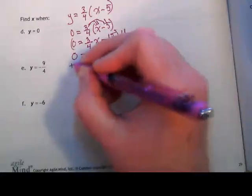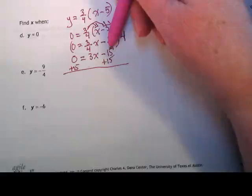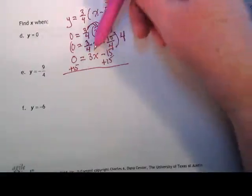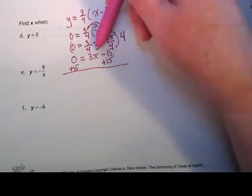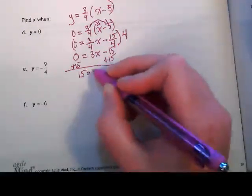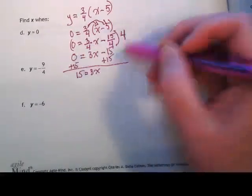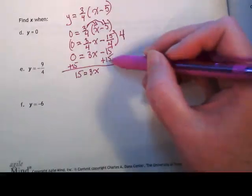So now I want to get the x by itself. I'm going to add the 15 to both sides, why? Because it's on the right side of the equation with the term that has an x and we're trying to get that x alone. So now we have 15 is equal to 3x because when I moved this to the other side of the equation, negative 15 became positive 15.